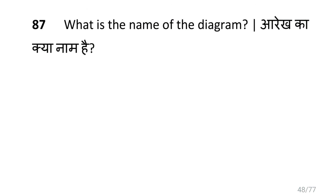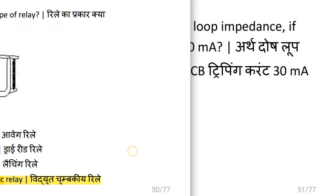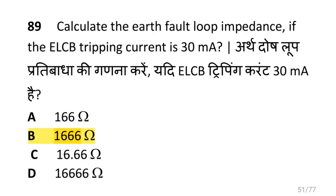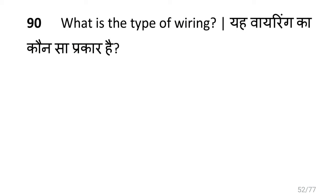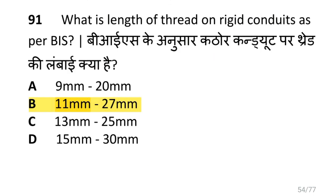What is the name of this diagram? That is staircase wiring. What is the type of relay? That is electromagnetic relay. Calculate the earth fault loop impedance if the ELCB tripping current is 30 milliampere. Then the earth fault loop impedance will be 1666 ohms. What is the type of wiring? That is cleat wiring. What is the length of thread on rigid conduit as per BIS? That is 11 mm to 27 mm.